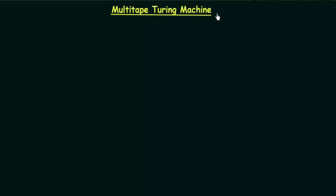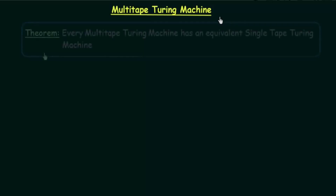Now, in this lecture, we will be introducing a new kind of Turing Machine which is called a multi-tape Turing Machine — which means this Turing Machine has more than one tape. And we will see if this multi-tape Turing Machine is more powerful than the single tape Turing Machine, or if they are the same in their power. If the single tape Turing Machine is as powerful as a multi-tape Turing Machine, then we should be able to design an equivalent single tape Turing Machine for every multi-tape Turing Machine that we have.